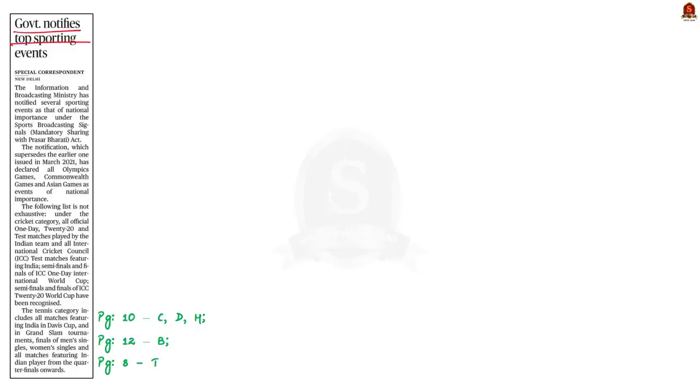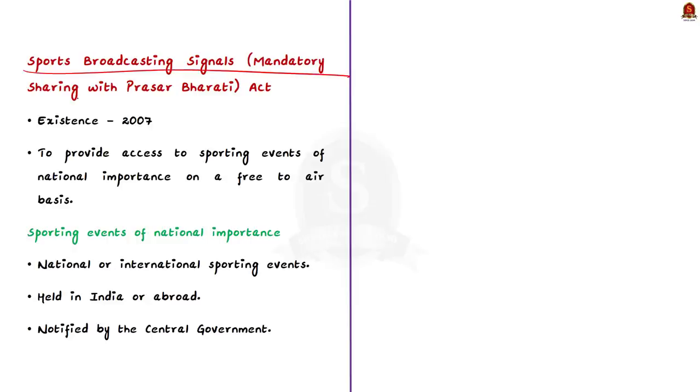So, now let us take up this last article for discussion. It says that Information and Broadcasting Ministry has notified several sporting events as sporting events of national importance. And this has been notified under the Sports Broadcasting Signals Mandatory Sharing with Prasar Bharati Act. And this notification supersedes the earlier issued notification in March 2021. So, today we are going to see what are these sporting events of national importance. First, know that the Act came into existence in 2007. And it is drafted to provide access to the largest number of listeners and viewers on a free-to-air basis.